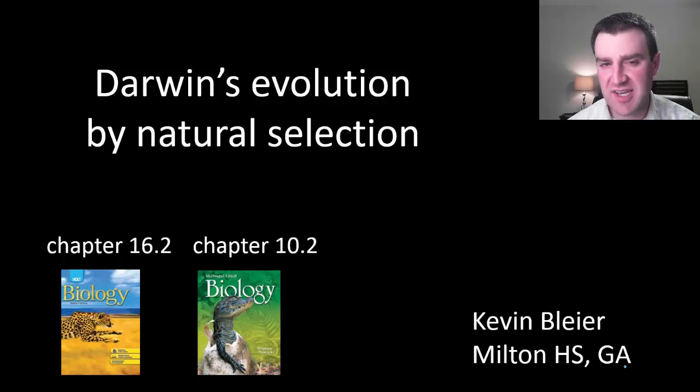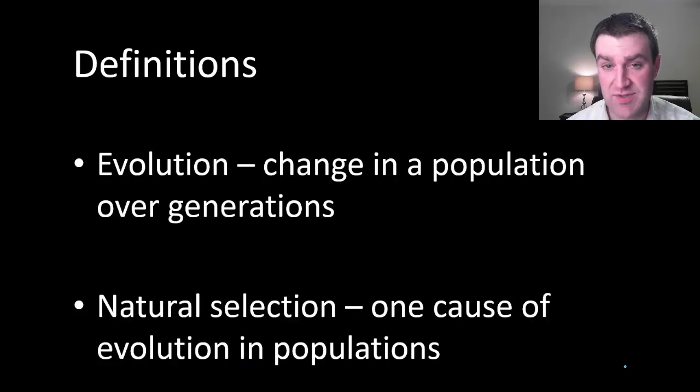In this video we're going to talk about Darwin's idea for evolution by natural selection. Let's start by defining those two terms. Evolution is a broad term talking about any time a population changes over many generations. Natural selection is not quite the same as evolution. Natural selection is one of the causes of evolution. As we'll see later in this unit, there are other forces that can also cause evolution, but natural selection is certainly one of the most important ones.